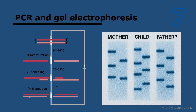Elongation happens through a polymerase, but it is not human DNA polymerase — that would denature at this temperature. Instead, we use Taq DNA polymerase, which comes from a bacterium that lives in hot springs, meaning it's adapted to really high temperatures. But it does the same thing — it adds nucleotides. So we're mimicking replication, but artificially.